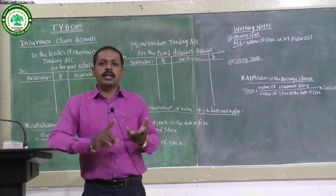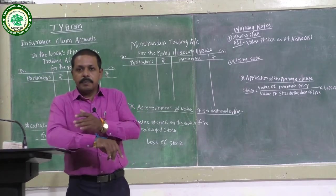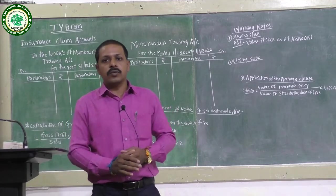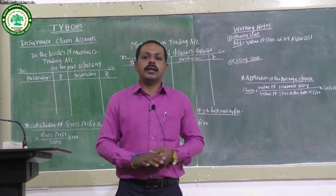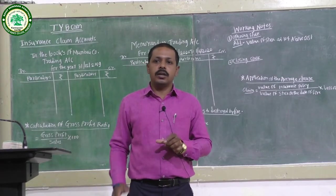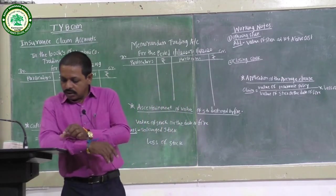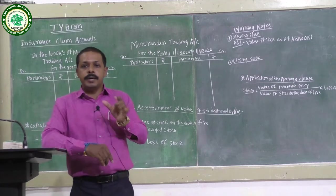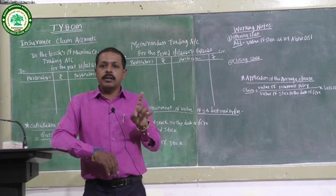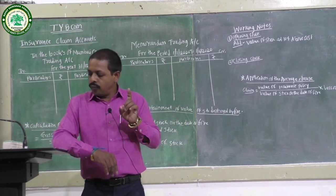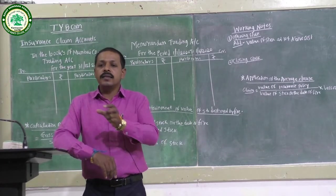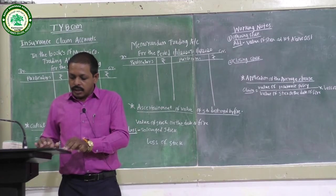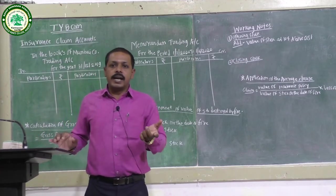The financial year starts 1st January and ends 31st December. The previous year runs from 1st January 2019 to 31st December 2019, and the current year from 1st January 2020 onwards. The date of fire is 1st April 2020. The indemnity period for Mumbai Company is 1st January 2020 to 1st April 2020.